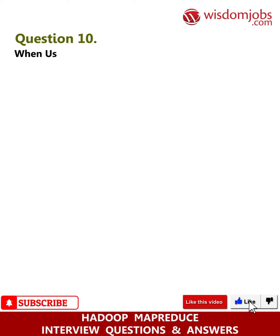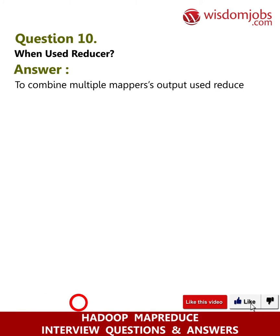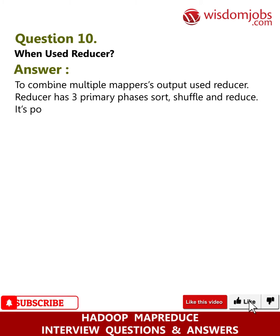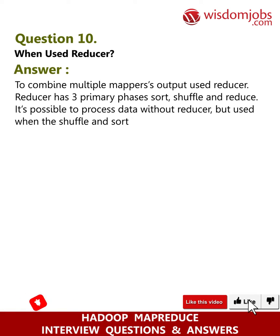Question 10: When is a reducer used? Answer: A reducer is used to combine multiple mappers' output. The reducer has three primary phases: sort, shuffle, and reduce. It is possible to process data without a reducer, but it is used when shuffle and sort is required.